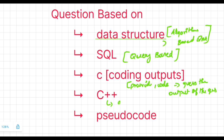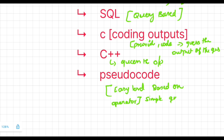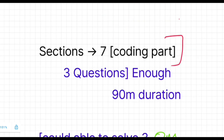The coding output questions involve finding what series of numbers a given code produces. For pseudocode questions, it is very easy level and completely based on operators, so you can refer to operator-based questions when preparing for this hackathon.